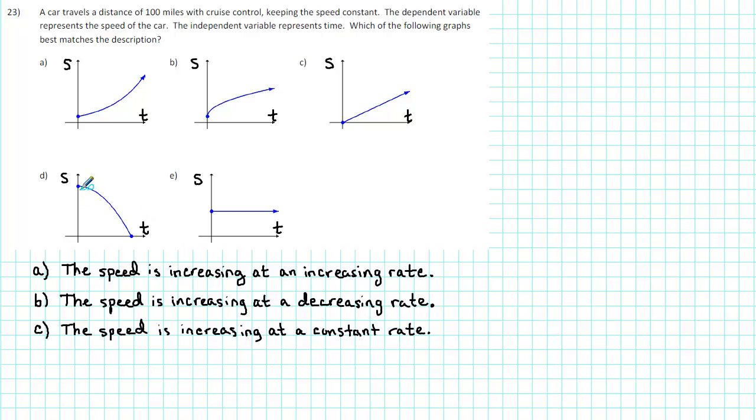For graph D, we see that the graph is falling from left to right, and it is curving in a downward direction. So that tells us that the speed is decreasing at a decreasing rate.